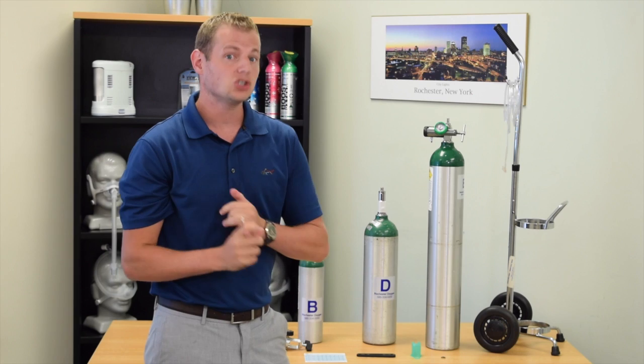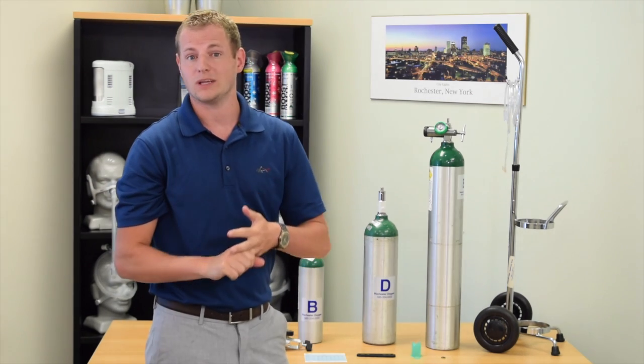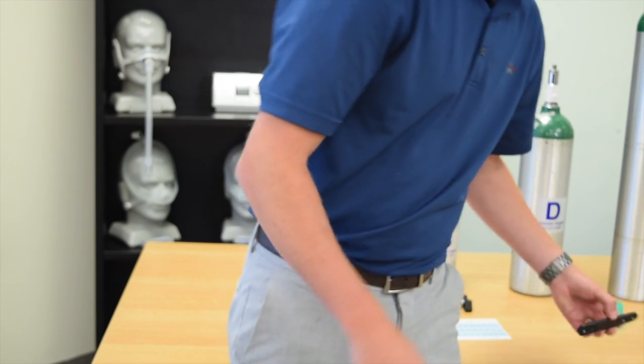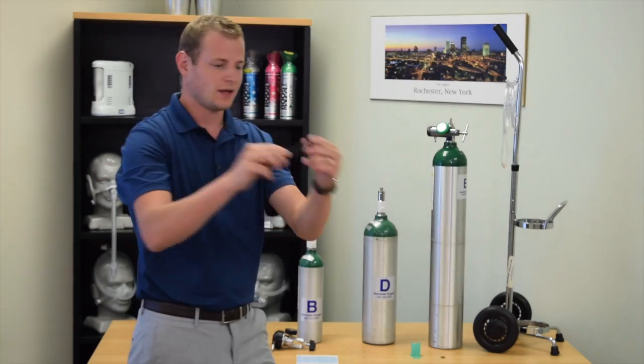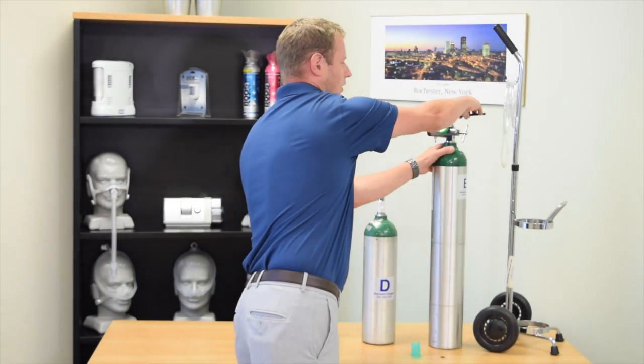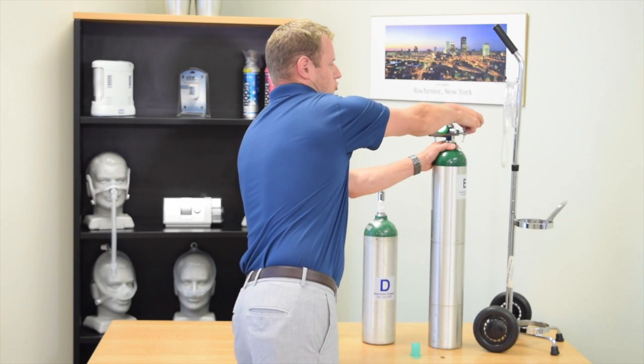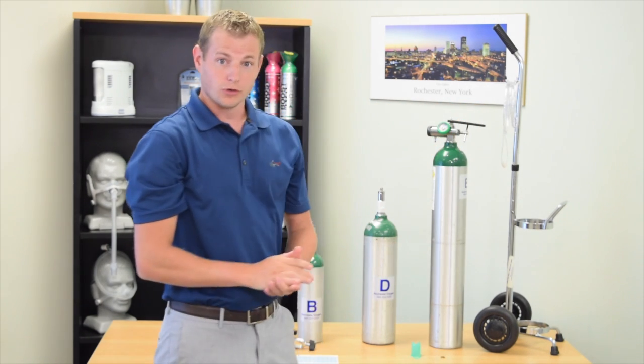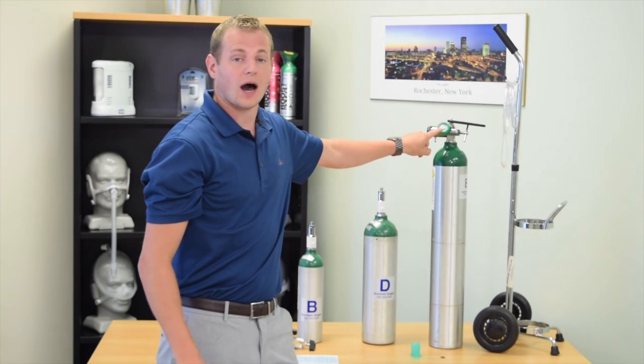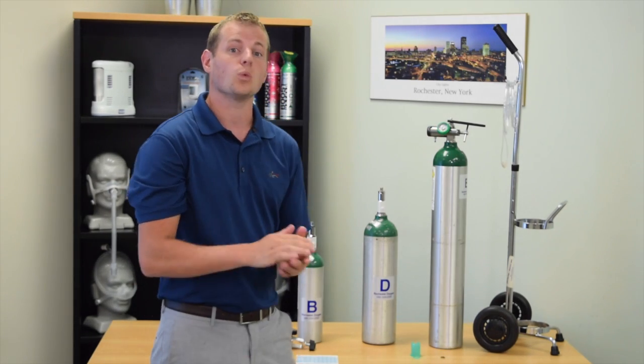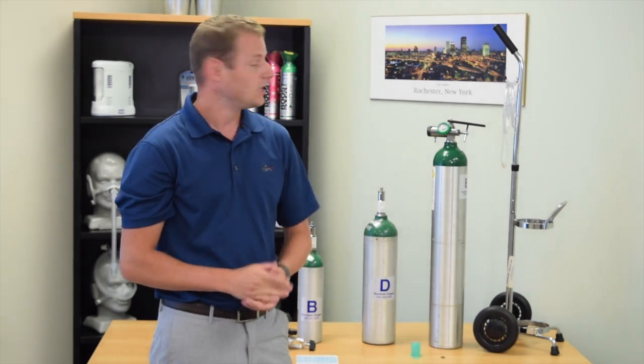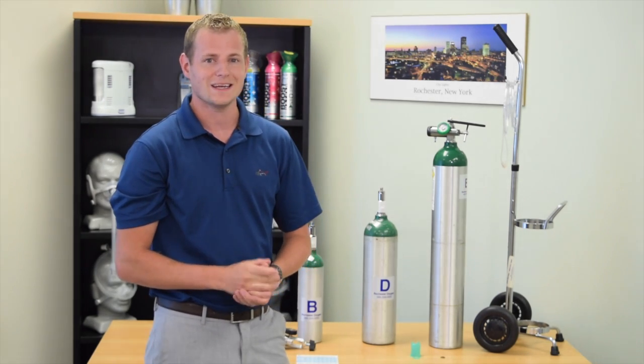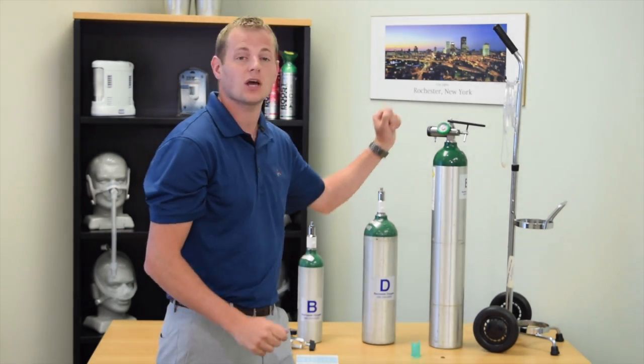Twist your T-bar until the regulator is secure. Now at this point, your gauge should still read zero and your liter flow dial should also read zero. You can then take your tank wrench, set it on top of your tank, and twist in the counterclockwise direction. You will notice the dial on your oxygen regulator gauge will go up to 2000 psi. 2000 psi is where all new tanks should read. It's shaded in a green color.